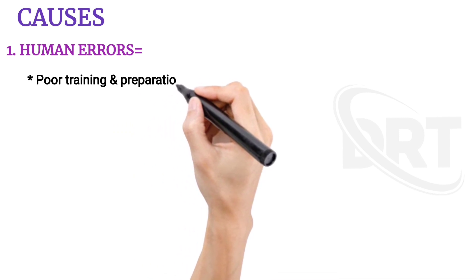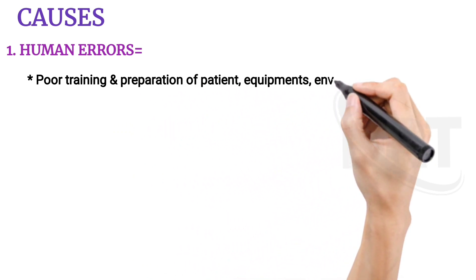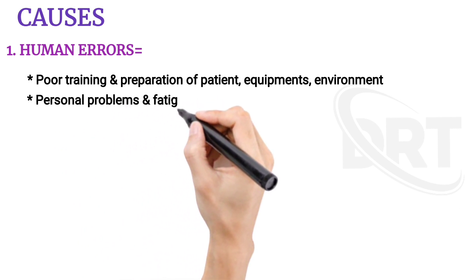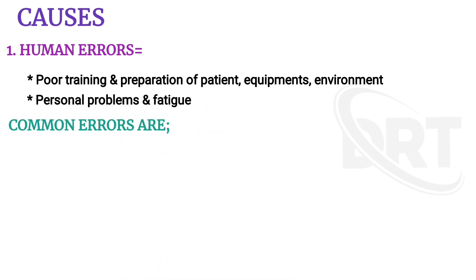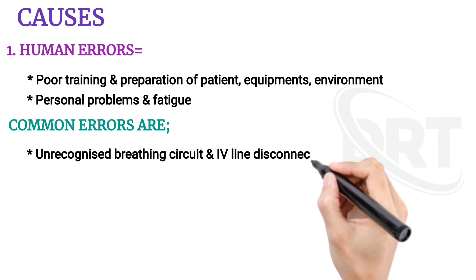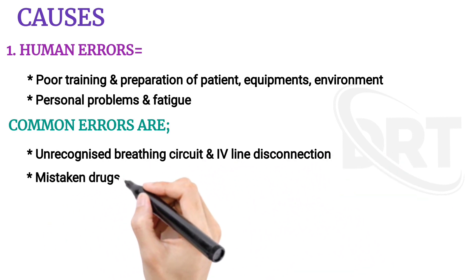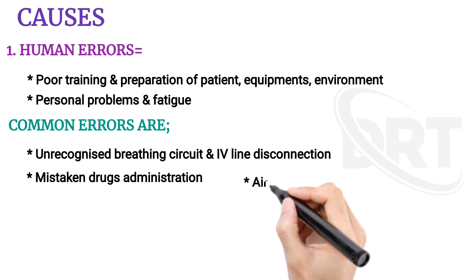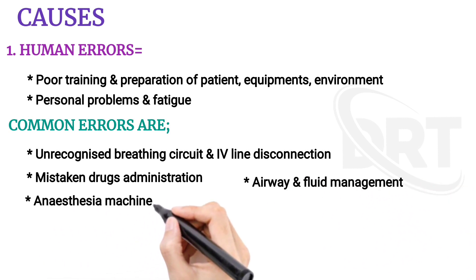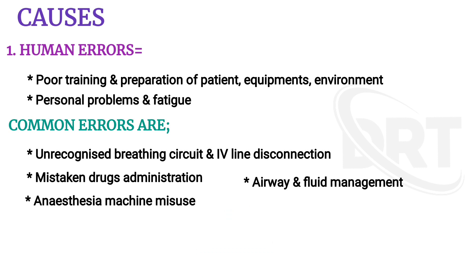Causes include human errors such as poor training and preparation of patient, equipment, and environment, as well as personal problems and fatigue. Common errors are unrecognized breathing circuit and IV line disconnection, mistaken drug administration, airway and fluid management issues, and anesthesia machine misuse. These can be avoided.